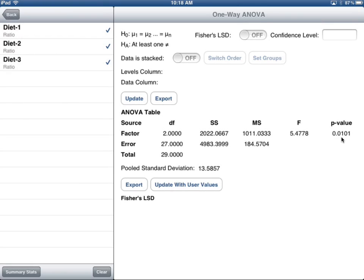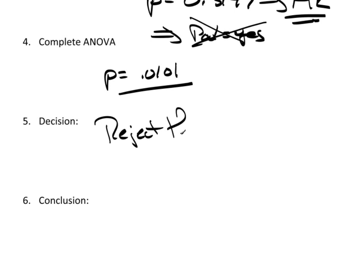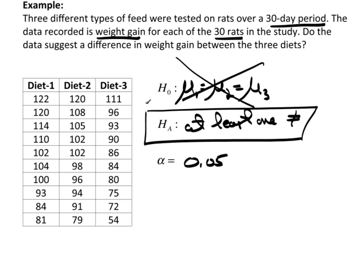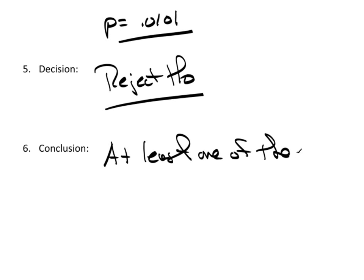Here's my p-value: 0.0101. That clearly leads us to reject and say somebody is different. My decision is to reject the null hypothesis. As a reminder, the null said all means were equal. The alternative — which seems more likely based on the p-value — says that at least one group is different. So the conclusion is: at least one of the groups is different.